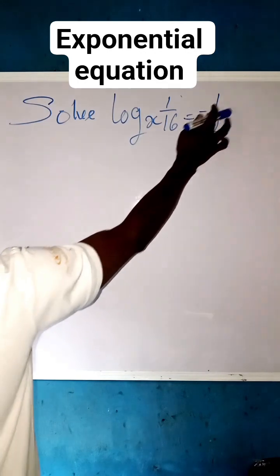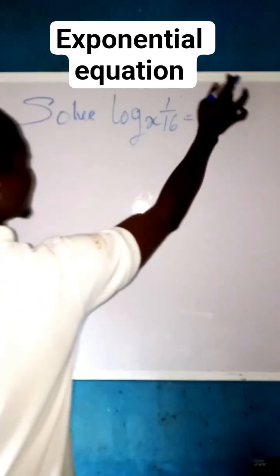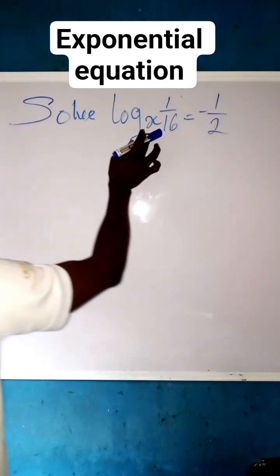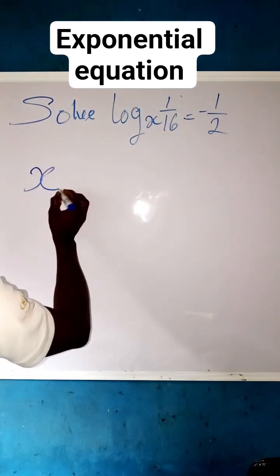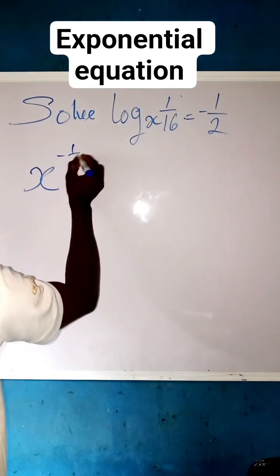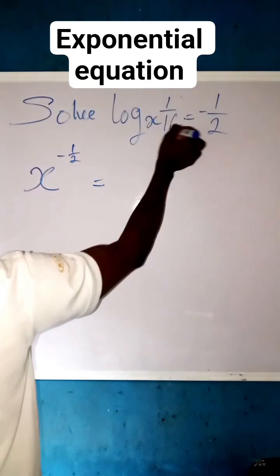We bring this minus 1 over 2 to become a power of this log x here, so that we now have x raise the power of minus 1 over 2, then equals to 1 over 16.